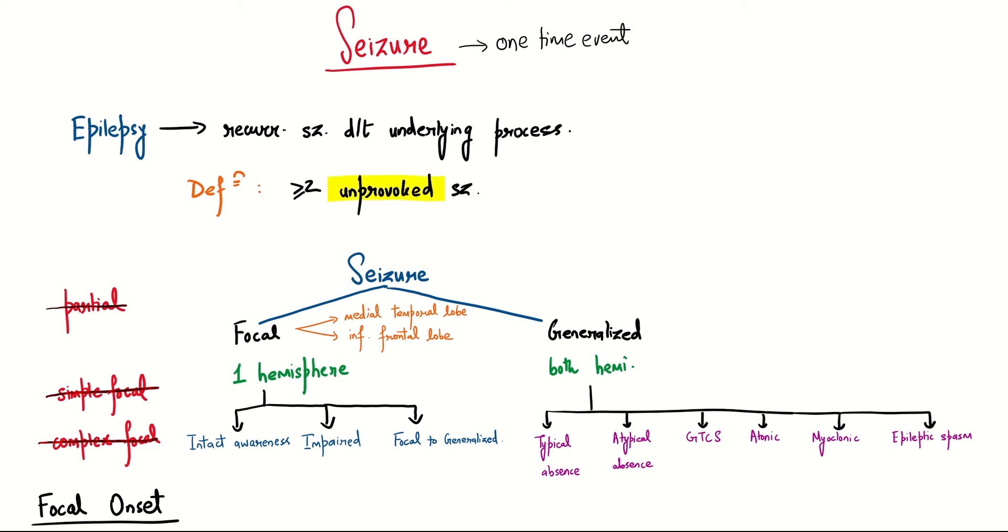By unprovoked, we mean that seizures can be provoked in people by video games or flashing lights. Seizure is of two types: focal and generalized. Focal involves one hemisphere, while generalized involves both hemispheres.